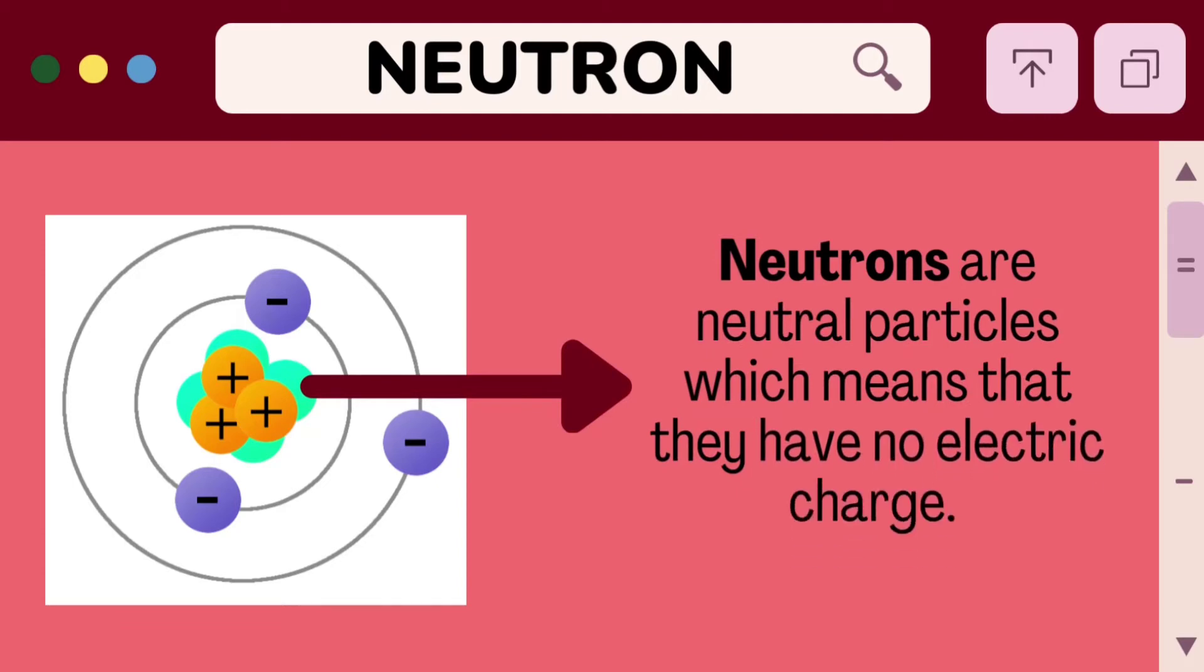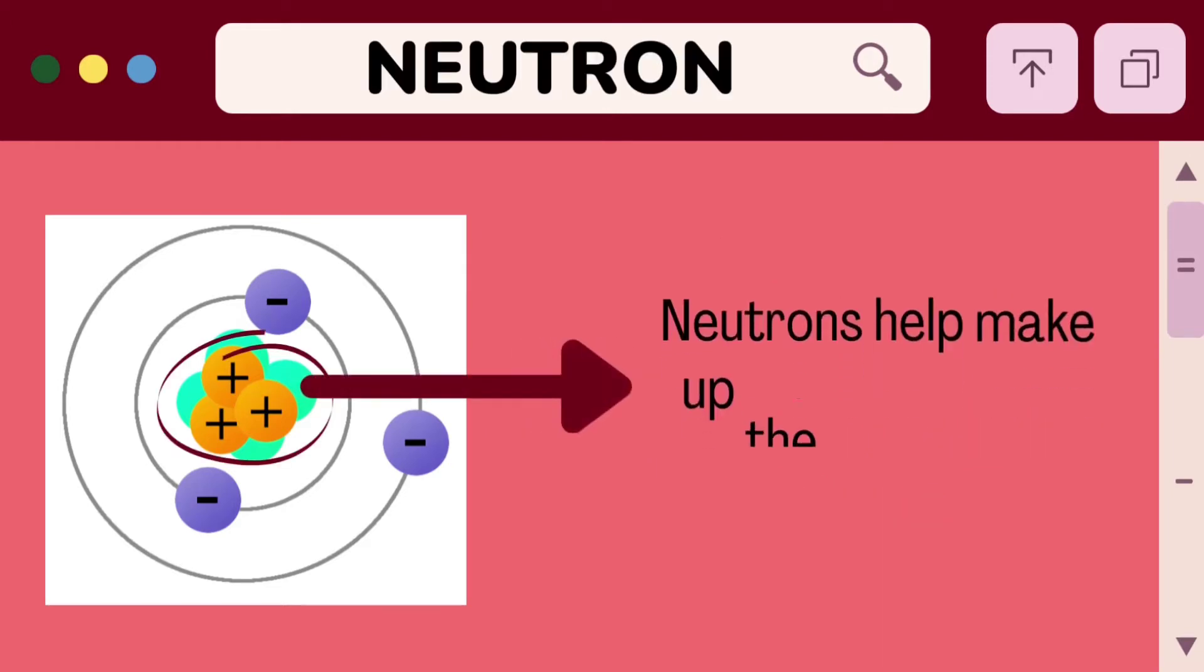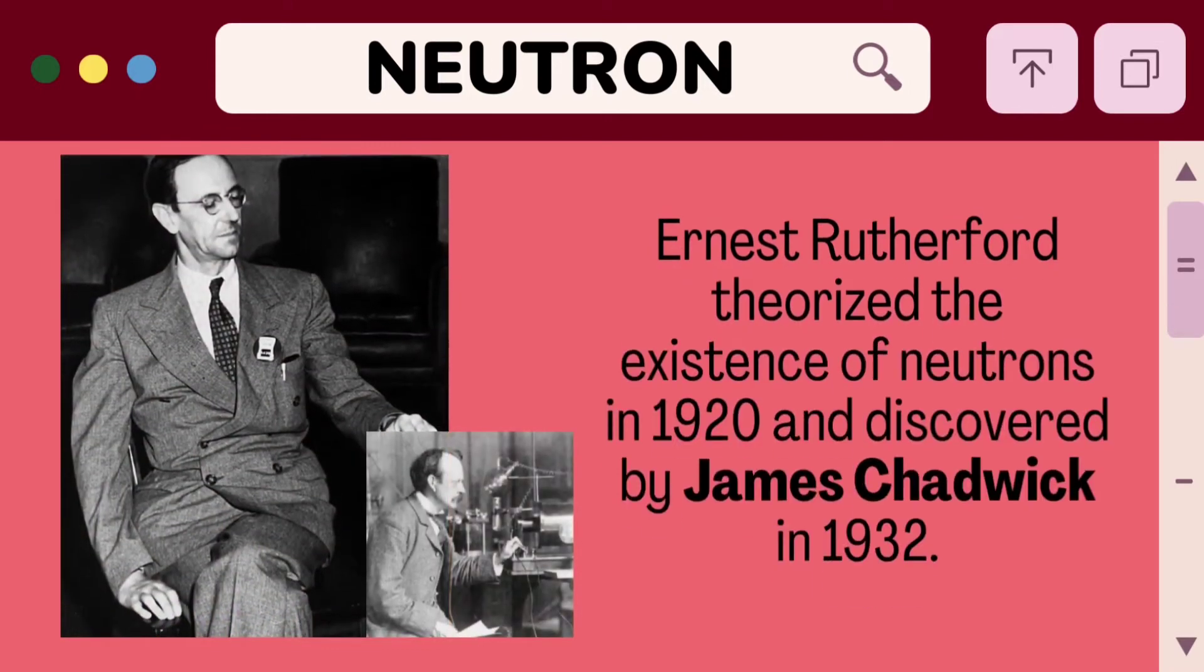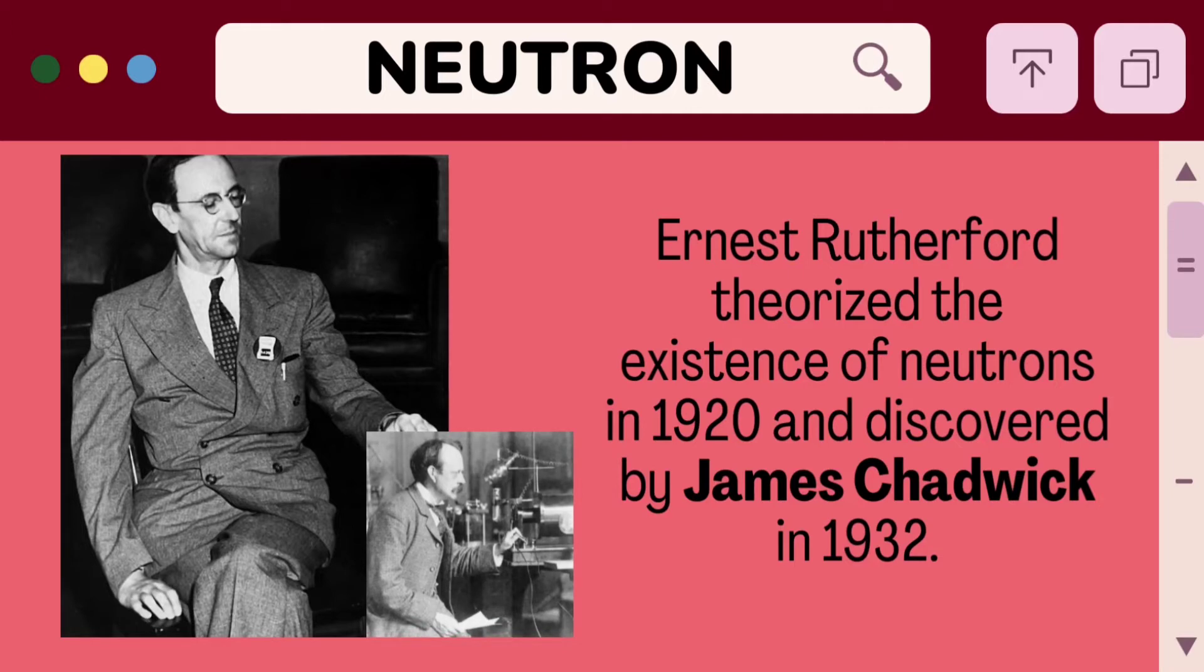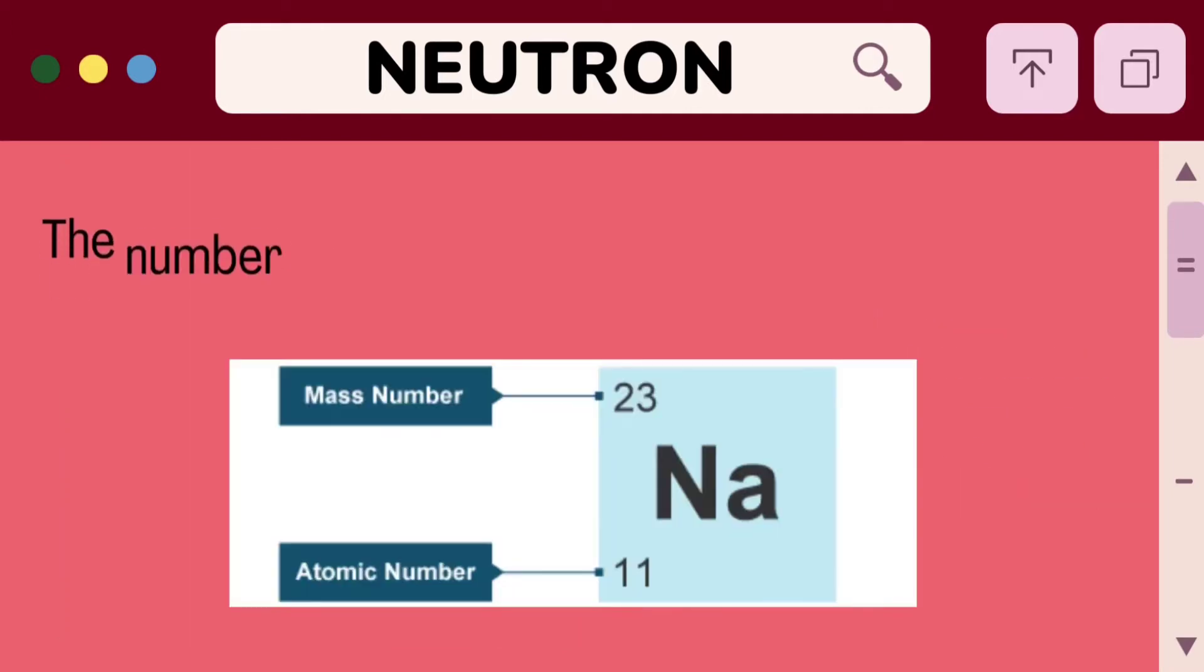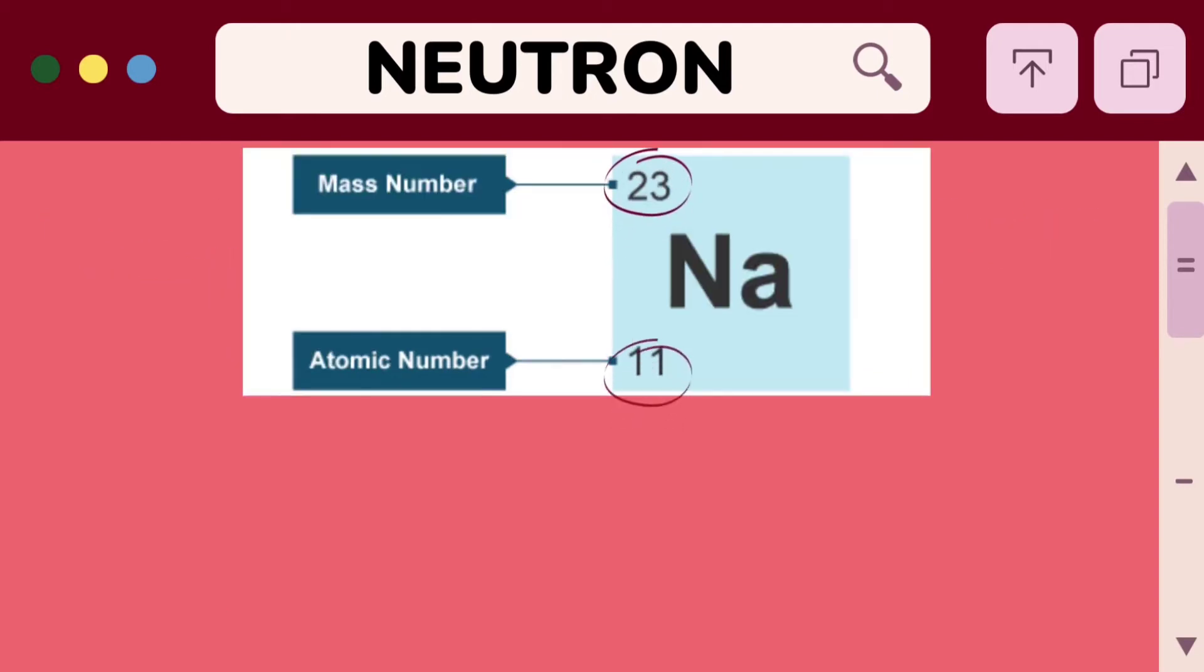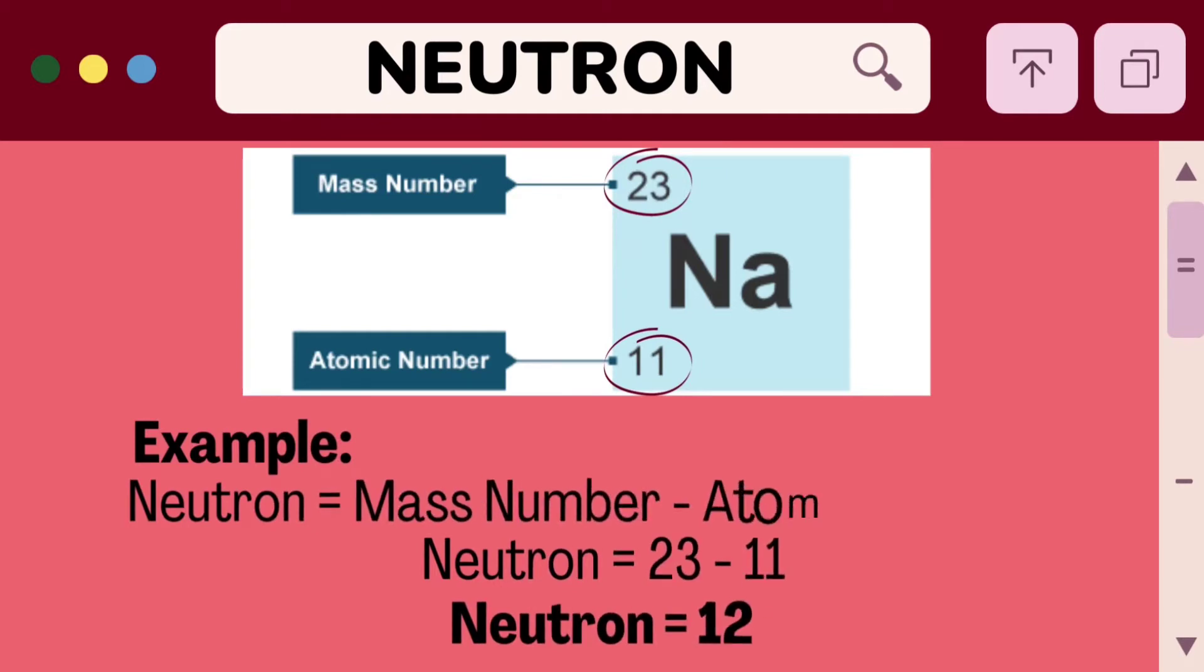Neutrons are neutral particles, which means that they have no electric charge. Neutrons help make up the nucleus of an atom. Ernest Rutherford theorized the existence of neutrons in 1920 and they were discovered by James Chadwick in 1932. The number of neutrons of an element is equal to the mass number minus the number of protons of the element. Sodium, for example, has a mass number of 23 and an atomic number of 11. Then, to get the number of neutrons of sodium, subtract the atomic number 11 from the mass number 23. The answer is 12.